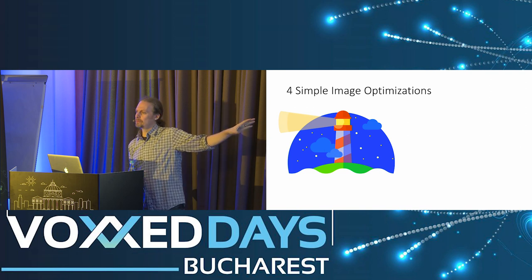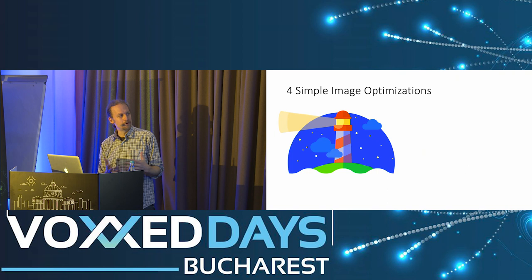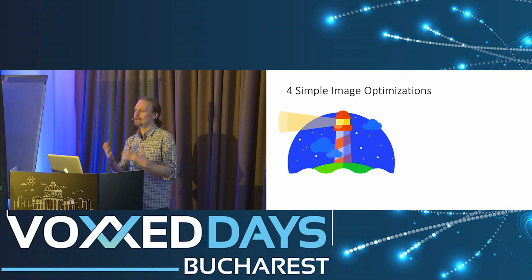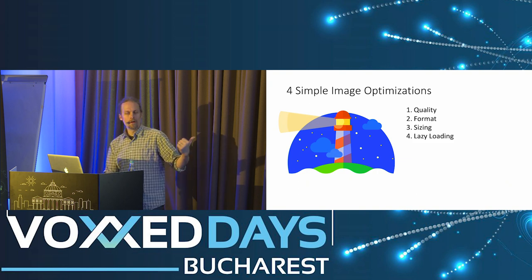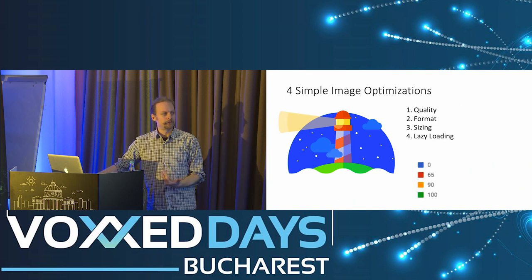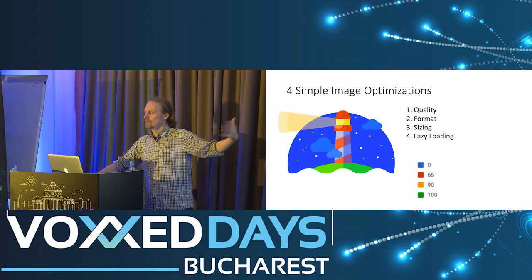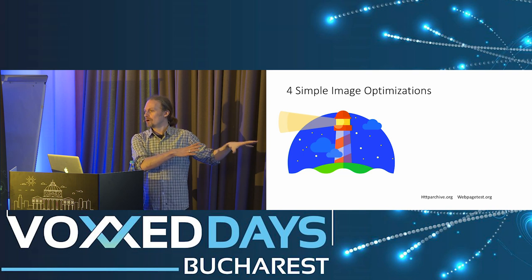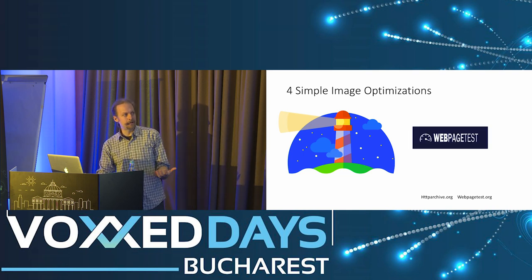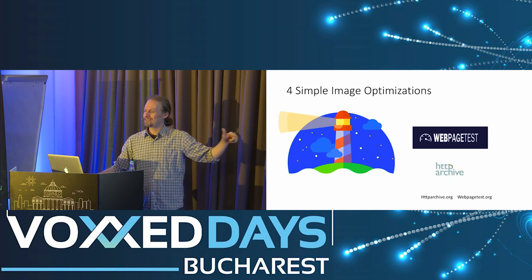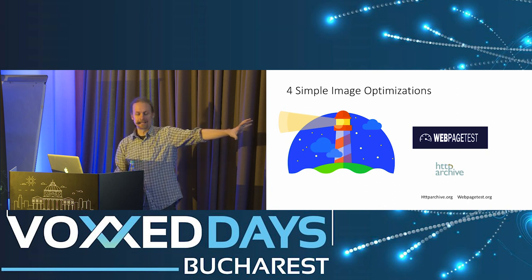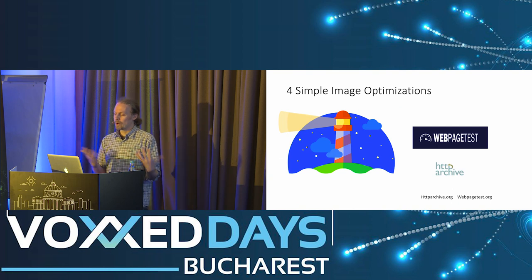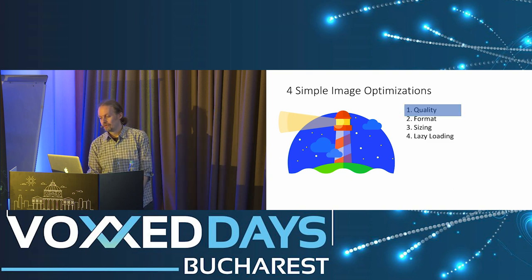I'm going to use a tool called Lighthouse. It's a free tool that measures and gives you ideas on how to speed up your web page on mobile. There are four image optimizations inside Lighthouse: quality of the images, the format of the images, the sizing of the images, and lazy loading. Lighthouse gives you a score between 0 and 100. It's built into Chrome DevTools and also inside WebPageTest, and the HTTP Archive is built on top of WebPageTest, so I can see Lighthouse scores for all those websites.